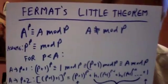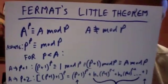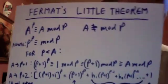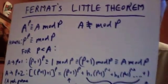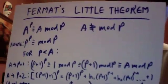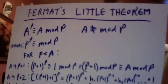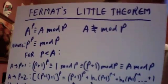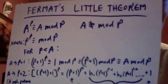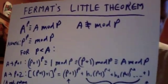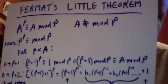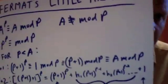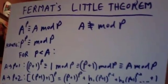Fermat's Little Theorem is stated as: a to the power of any prime p is equivalent to a mod p. In other words, it equals a multiple of that prime plus a, provided that a is relatively prime to p.